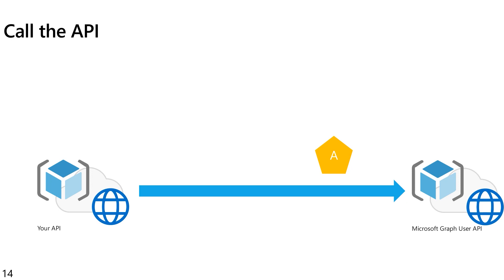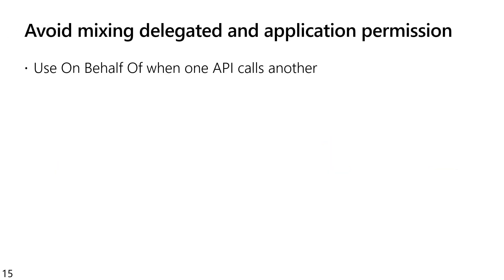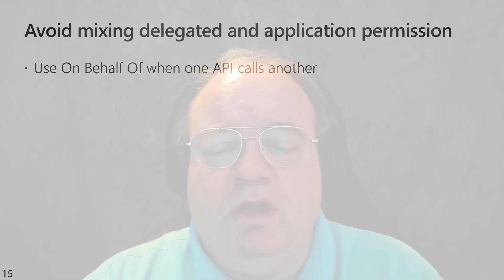Assuming the token is good and the claims are good, the Microsoft Graph API will work as it's supposed to. You should definitely avoid mixing delegated and application permissions in your applications and APIs. For applications it's pretty straightforward — always ask for an access token on behalf of the user. For APIs you have to do a little bit more and use the on-behalf-of flow whenever one API calls another API in a delegated permission scenario. I encourage you to make sure and check into using the on-behalf-of flow and always avoid mixing delegated and application permissions. Thanks and enjoy the rest of your day.